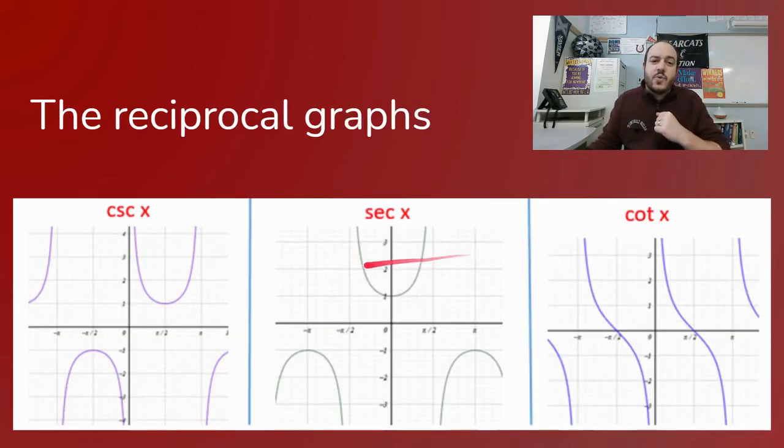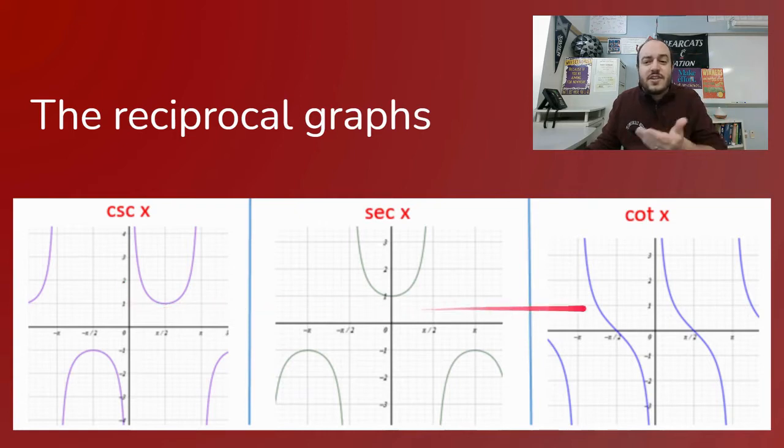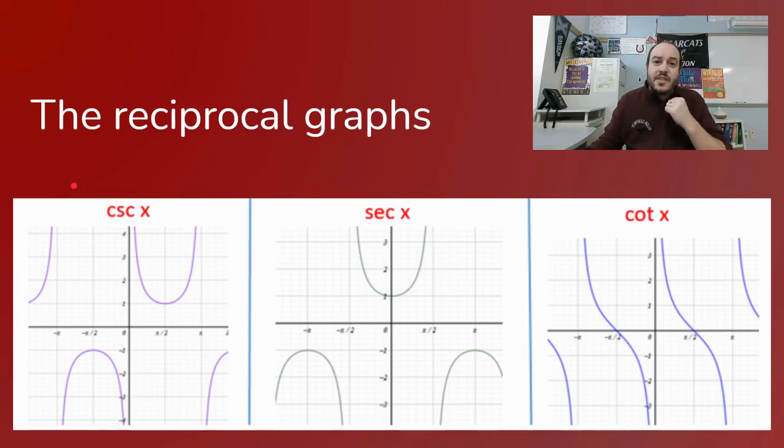Now just so that we can see them for the only time in this video, here are your reciprocal graphs of the cosecant, the secant, and the cotangent. Now seeing information about these on the ACT is extremely rare, but it can happen. So I want you to at least see what they look like so you'd be able to answer questions about that. But outside of their general looks, it is very rare that you'll need to know much more about these.